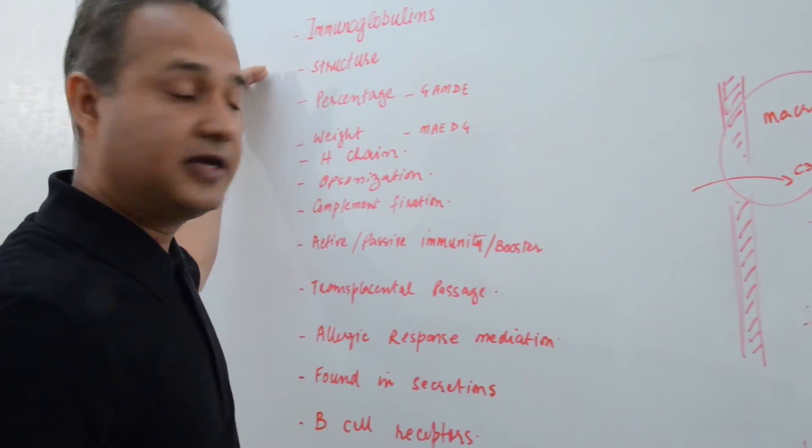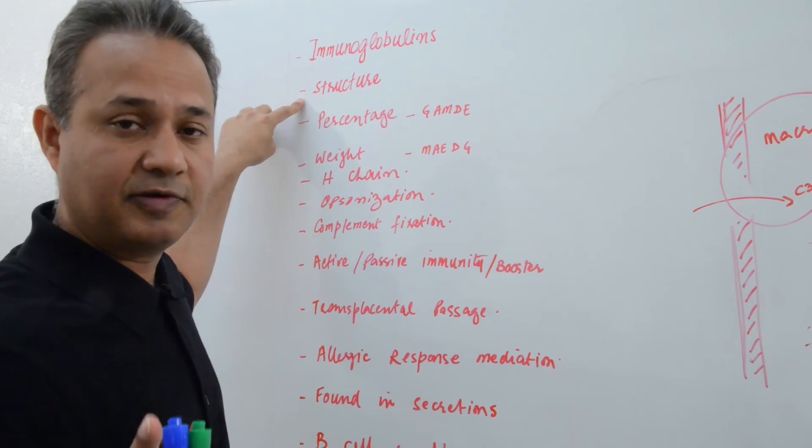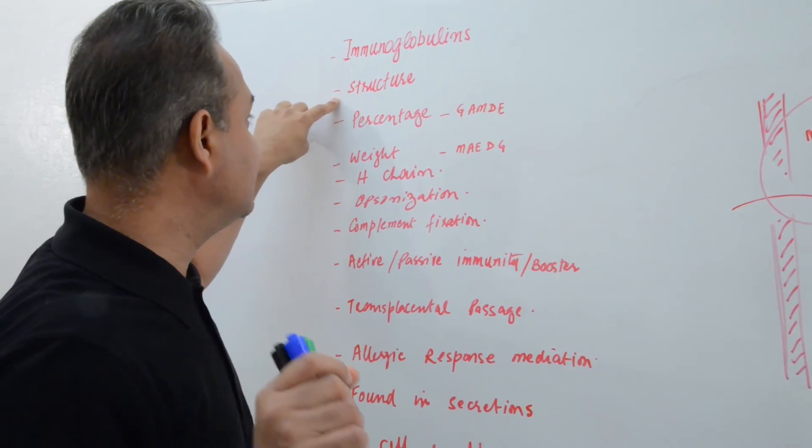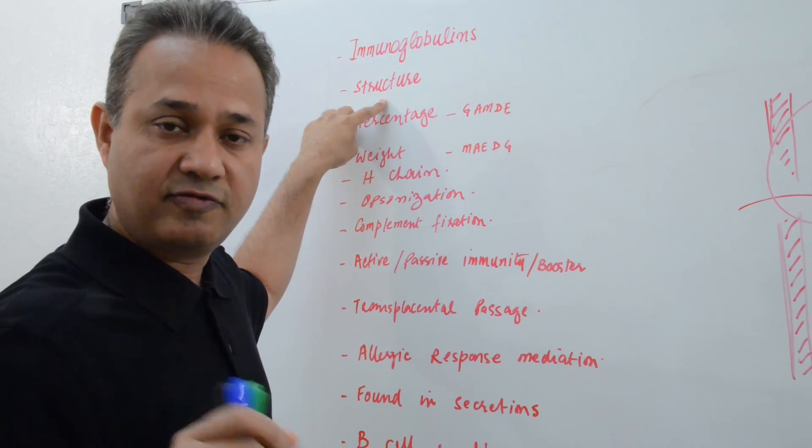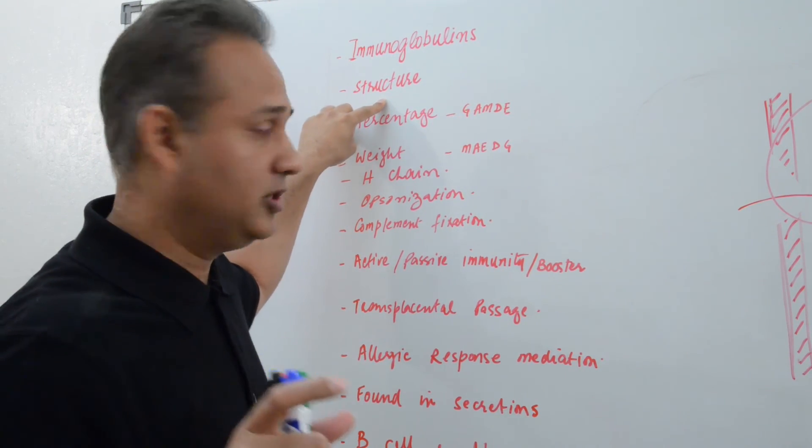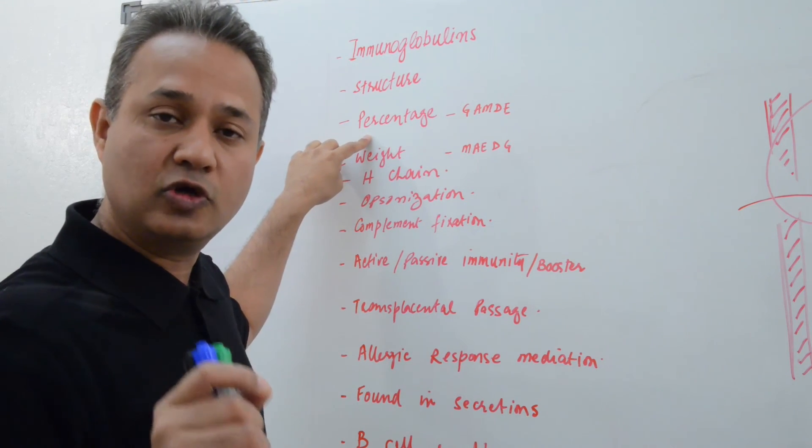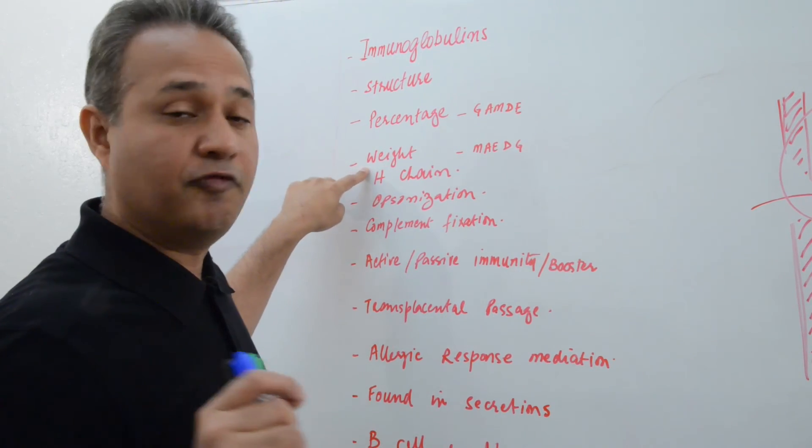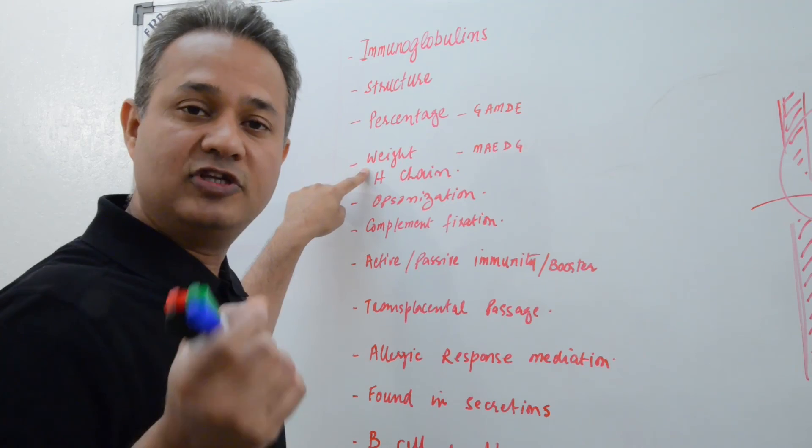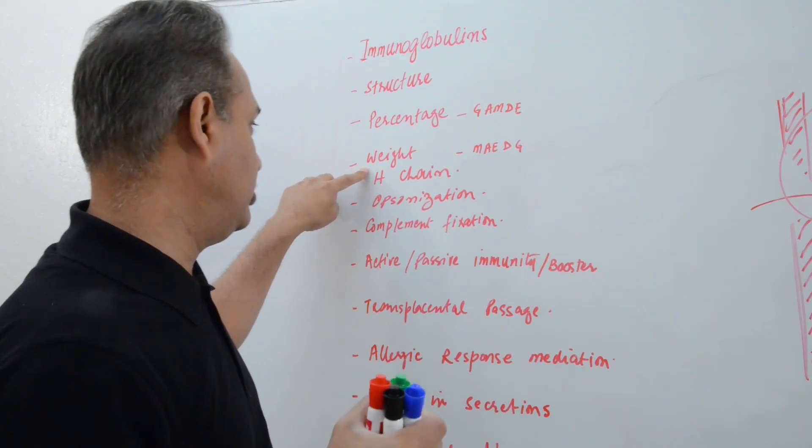In our lecture today, we'll be talking about the structure. We have talked about the structure before, but today, in specific, we'll talk about monomer, dimer, and multimer. What does that mean for immunoglobulin? We'll talk about what are the percentages of various immunoglobulins in plasma or in serum, more specifically. We'll talk about weights of immunoglobulins. Which immunoglobulin is heavier than which other immunoglobulin?